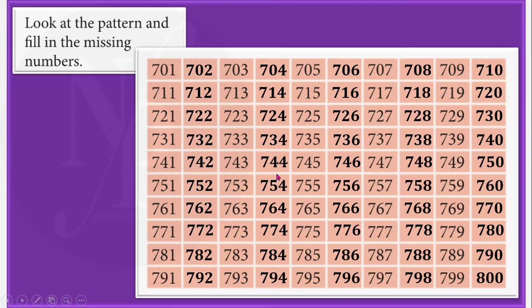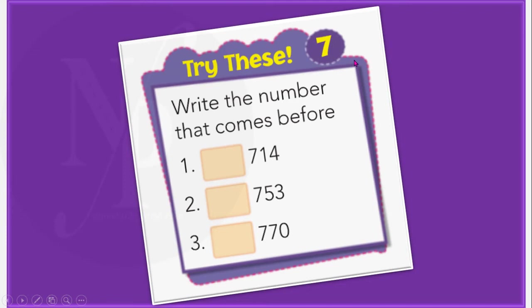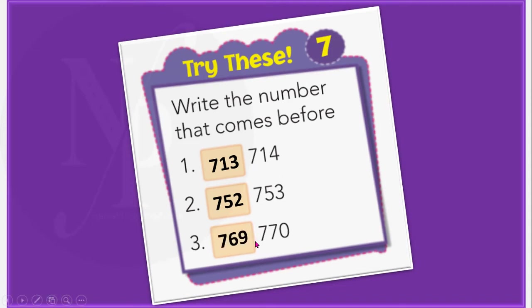You should also read aloud and write the number that comes before 714. Which number comes just before 714? Yes, it is 713. And in the second question, which number comes before 753? Yes, it is 752. We should write here. And the number that comes just before 770 is 769. We should write and fill these boxes.